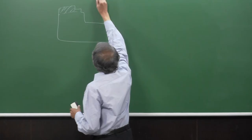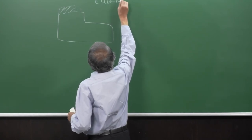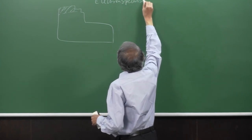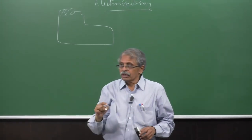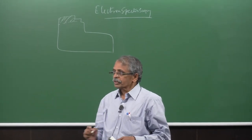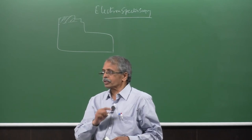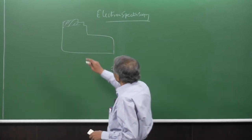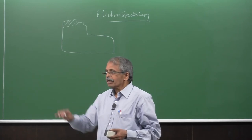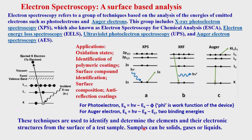Electron spectroscopy is different from electronic spectroscopy. Electronic spectroscopy involves electron excitation from ground to excited state, as in UV-visible absorption spectroscopy. Electron spectroscopy is what we are dealing with here. A host of things happen when you shine light on a material — from solids, liquids, or gases — and depending upon the energies of the electrons coming out, these can be photoelectrons, Auger electrons, and so on.